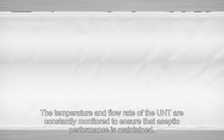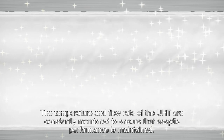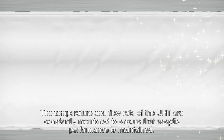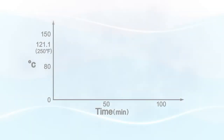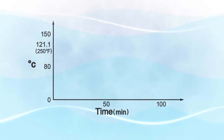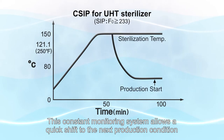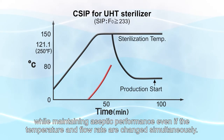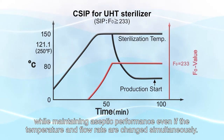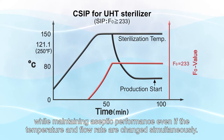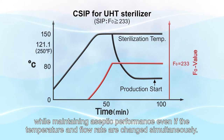The temperature and flow rate of the UHT are constantly monitored to ensure that aseptic performance is maintained. This constant monitoring system allows a quick shift to the next production condition while maintaining aseptic performance, even if the temperature and flow rate are changed simultaneously.